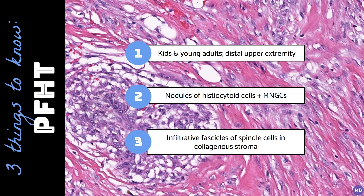This is an example of plexiform fibrohistiocytic tumor, a biphasic soft tissue neoplasm that most commonly presents in children and young adults as a slow-growing plaque on the forearm or hand. This lesion is composed of nodules of histiocytoid cells surrounded by infiltrative fascicles of spindle cells.